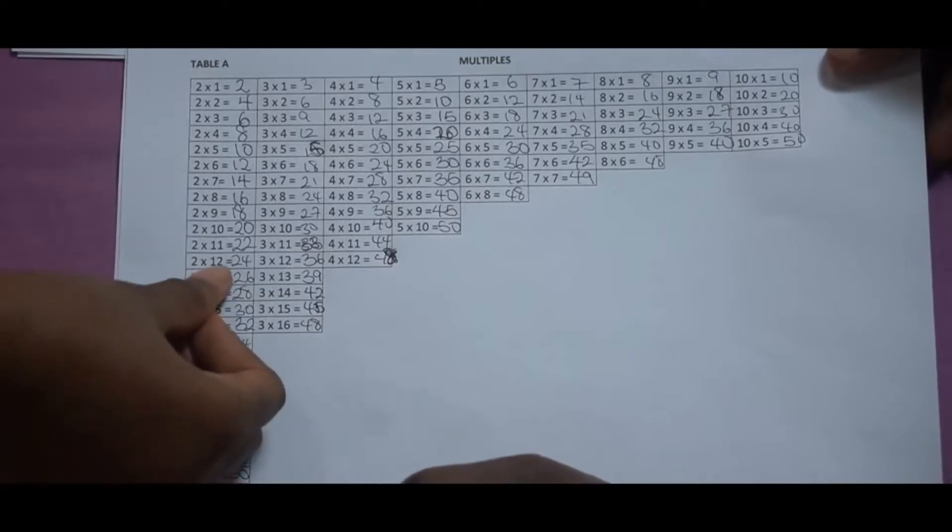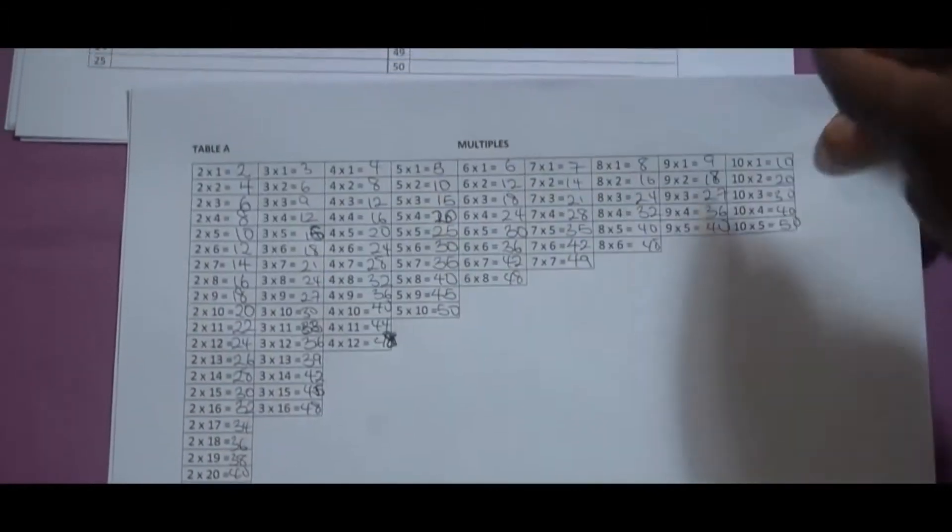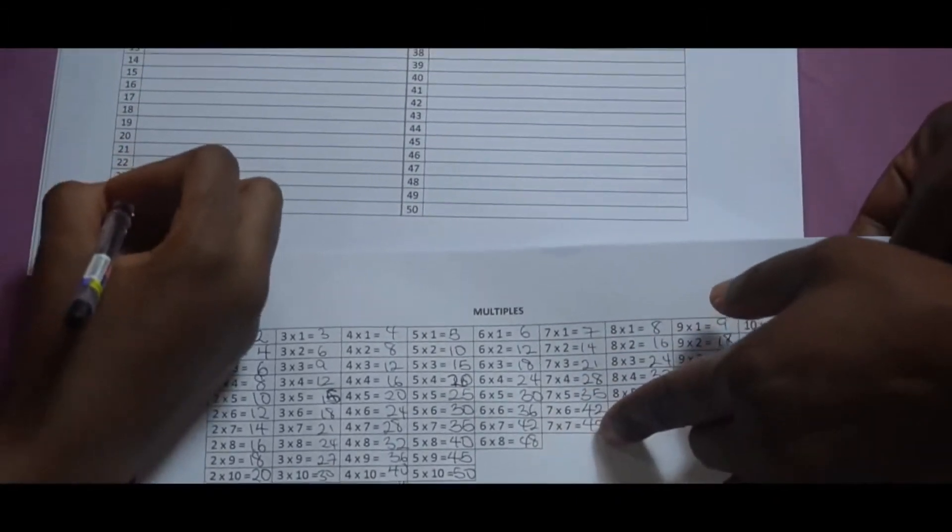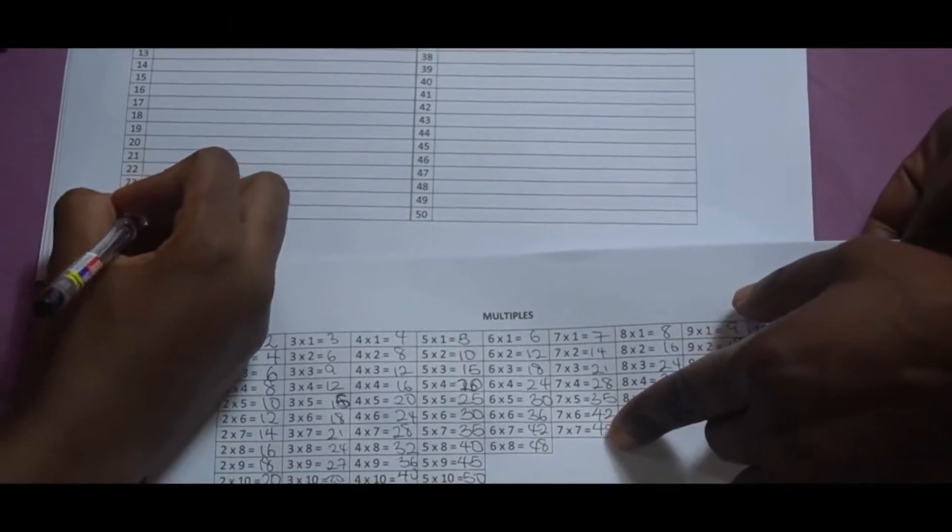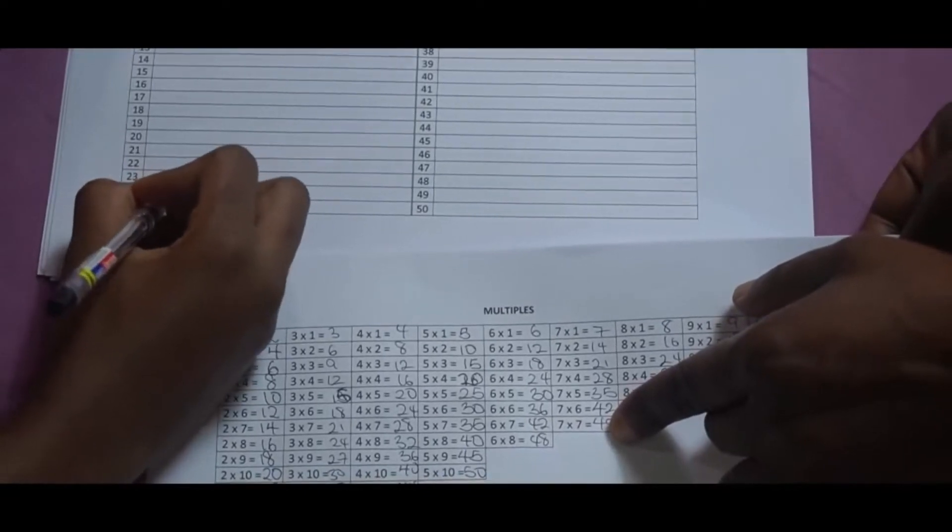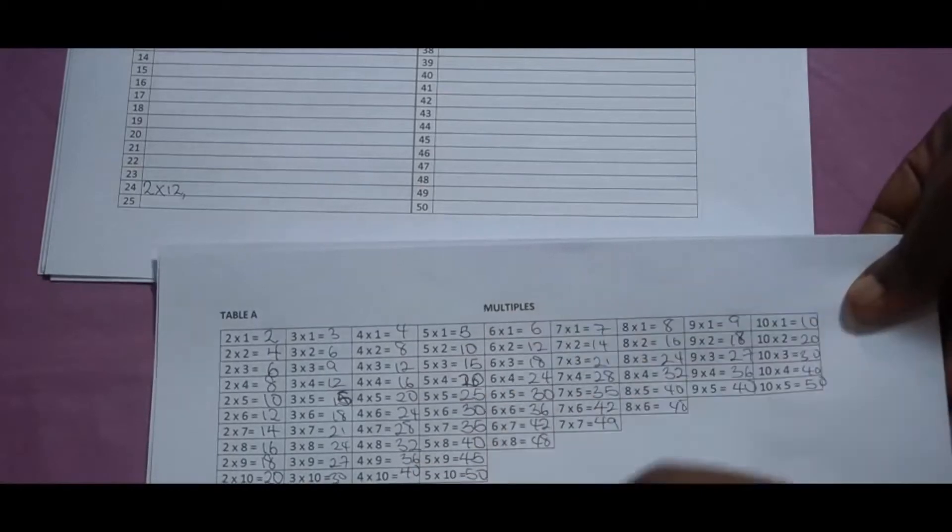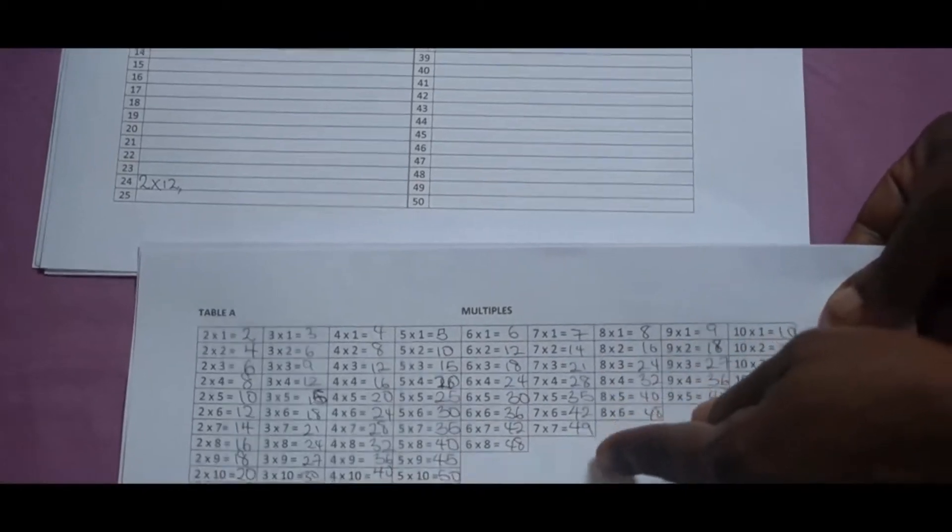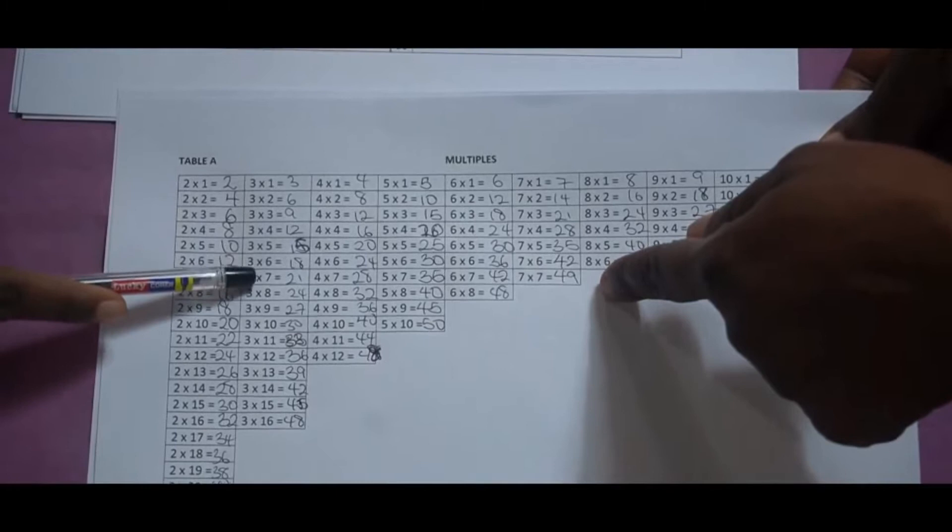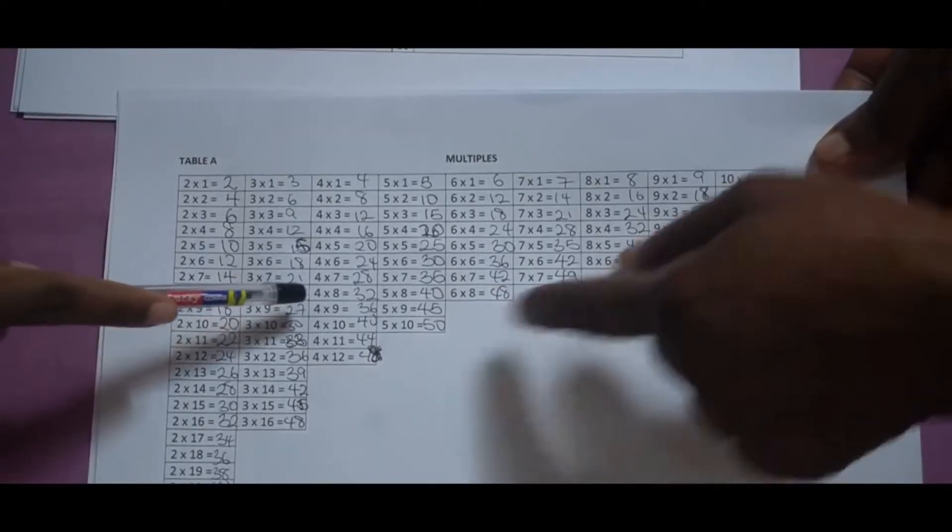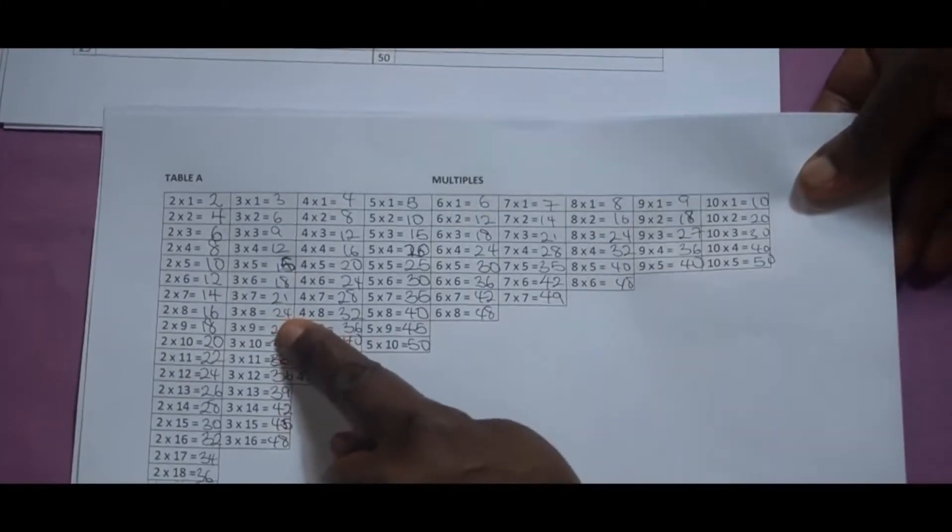2 times 12. 2 times 12, 24. Okay, so write that down here. Where again can you find 24? 3 times 8, 24. So write that combination.